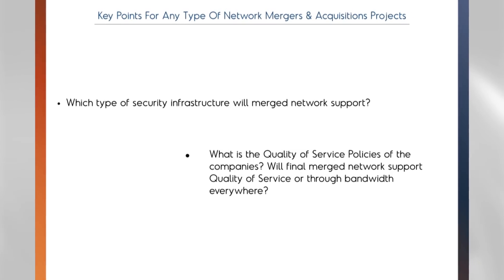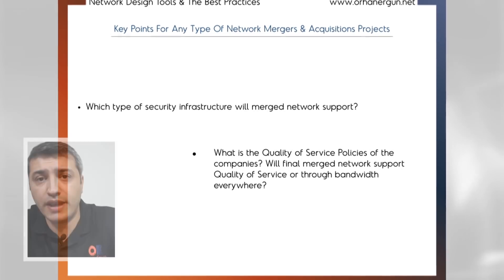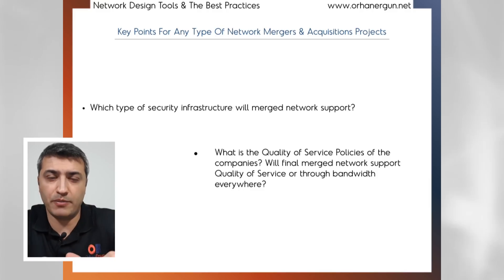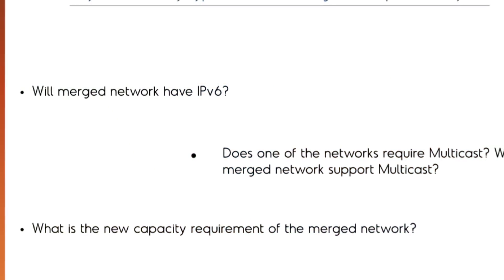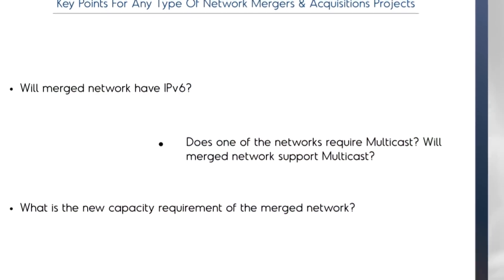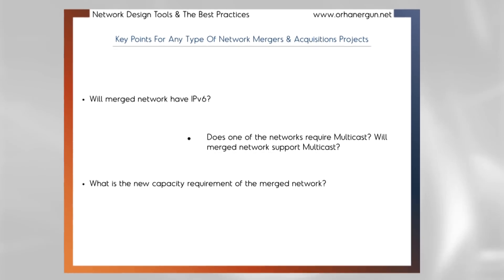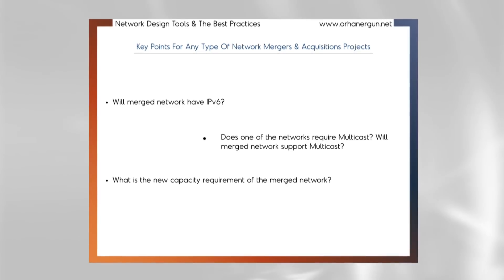There are other technologies to consider beyond routing. What about security policy? What about quality of service? Maybe one company has QoS in their network and the other doesn't, because there was no bandwidth problem. When those two companies merge, what will happen to the QoS policy? Will you deploy end-to-end quality of service, or maybe after the merge the capacity is enough and you won't need to deploy QoS? What about IPv6 — maybe one company has IPv6 or they are considering providing IPv6 service to customers after the merge?